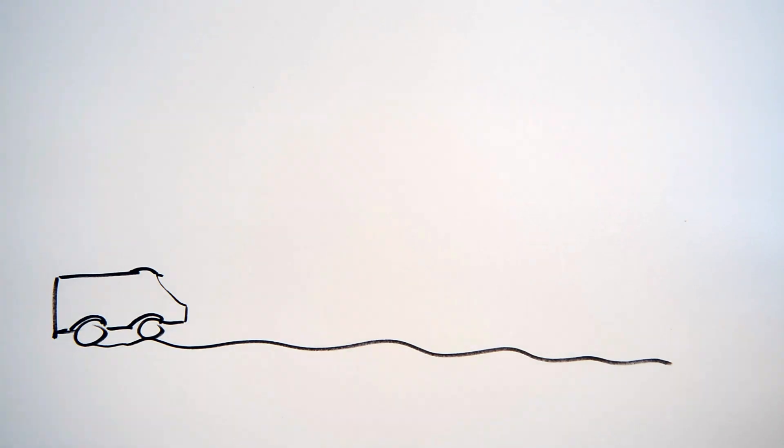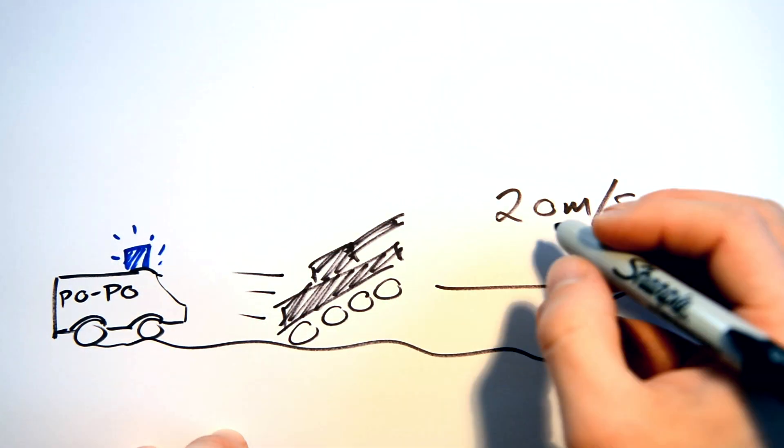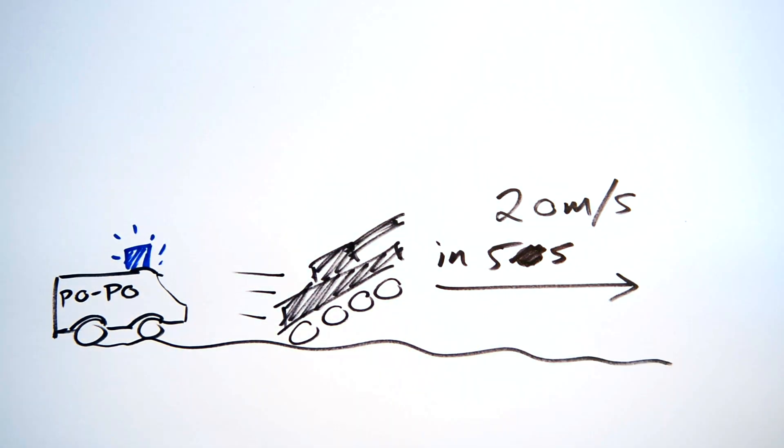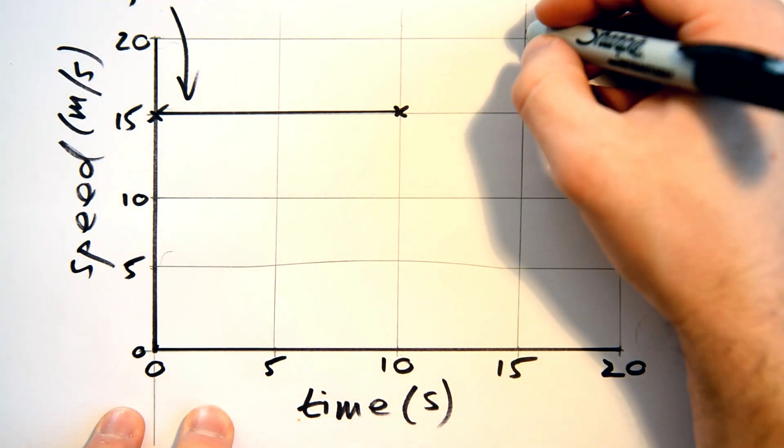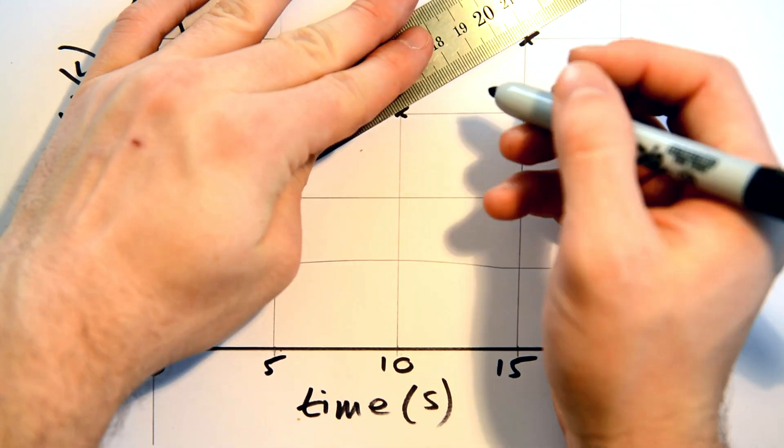OK, so now the police are on Bob's tail. Pushing the NOS button in his tank helps him to accelerate to 20 metres per second in 5 seconds. Let's show this on the graph. So we go from 15 metres a second to 20 metres a second in 5 seconds like this.